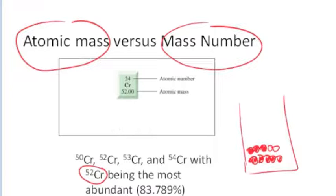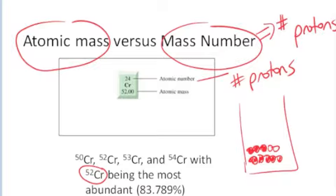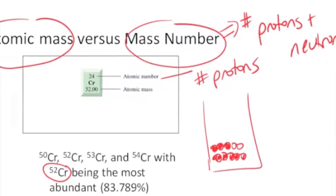The atomic mass is the weighted average of the masses of all the isotopes. The atomic number is just the number of protons, which is the defining characteristic of a particular element. The mass number is the sum of the number of protons plus neutrons in the nucleus.